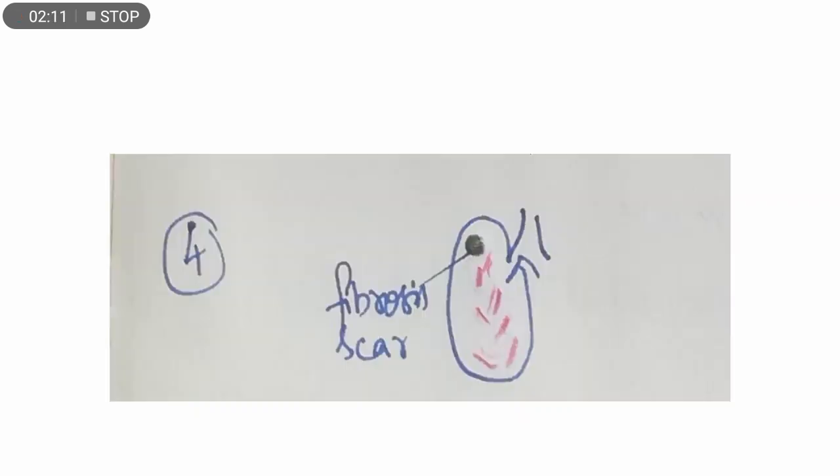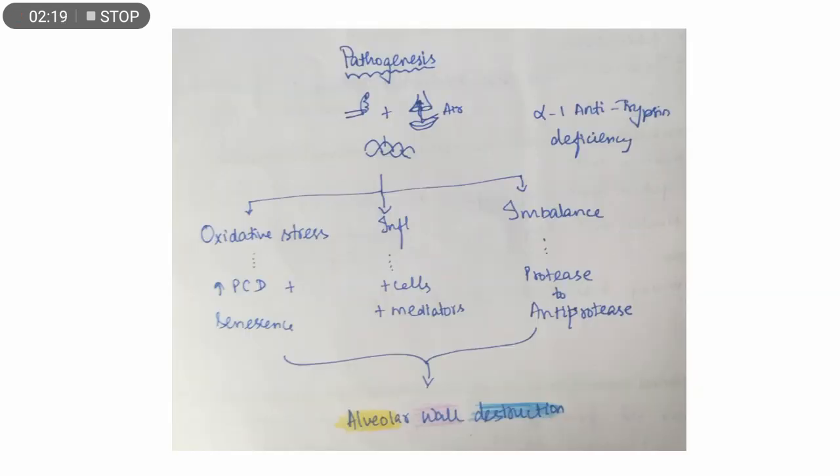The fourth type of emphysema is the irregular one, characterized by fibrosis and scarring. There is no specific lung area involved; it's irregularly distributed.